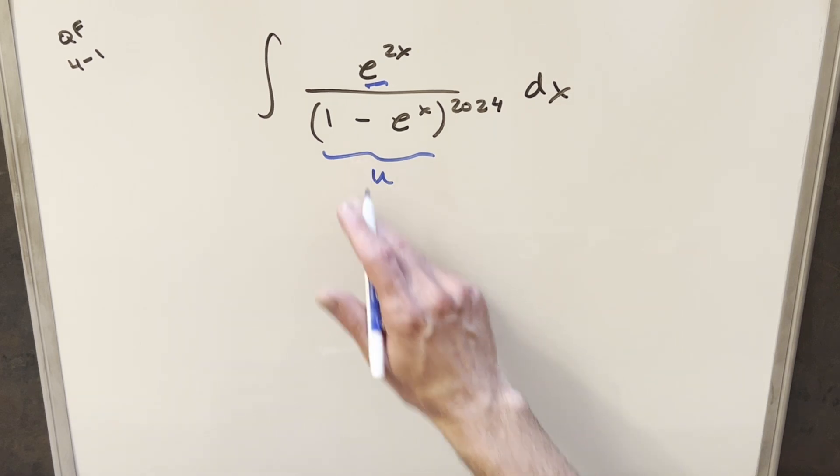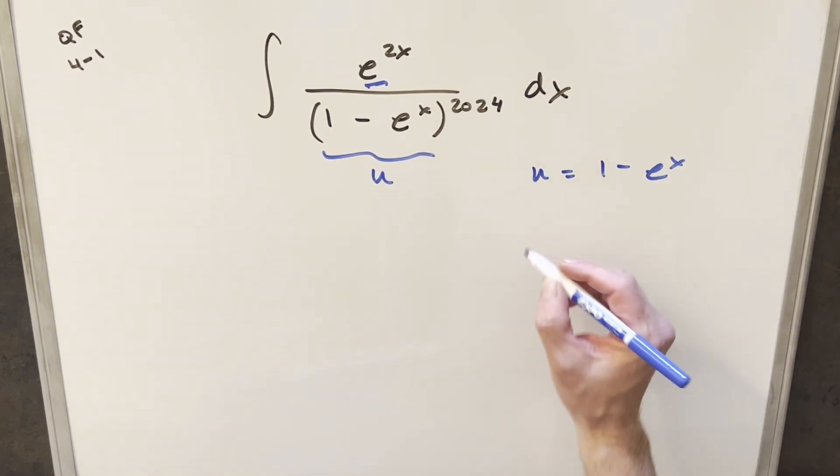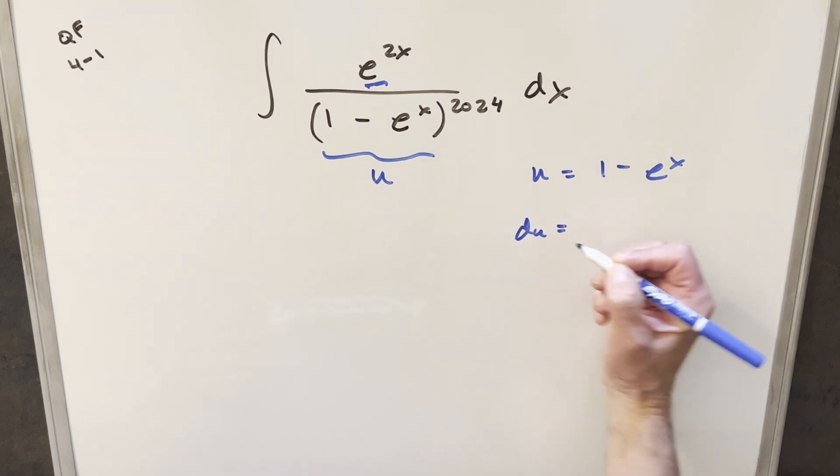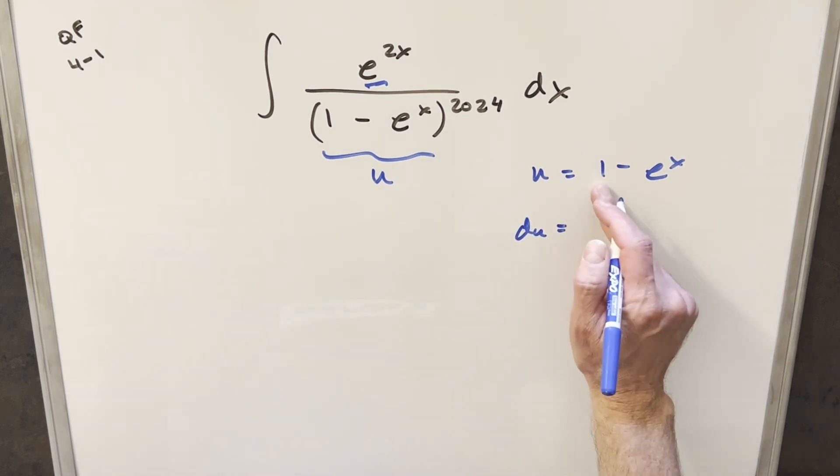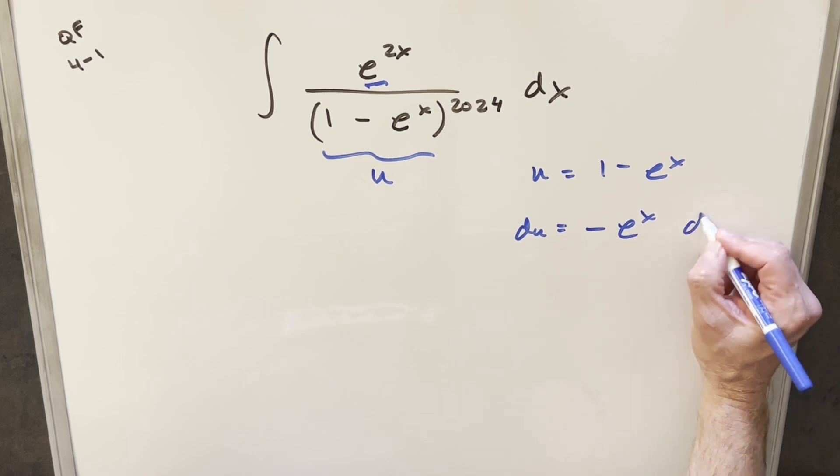We'll do our u-substitution for just 1 minus e to the x over here to the right. And then I'll go ahead and take a derivative here. So for our du value, this is just going to become the derivative of 1 is 0. The derivative of this is going to give me minus e to the x dx.